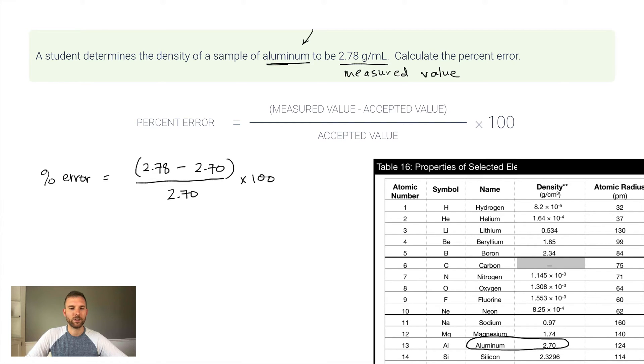Percent error equals the measured value, 2.78, minus the accepted value, 2.70, divided by 2.70, then times 100. Let's look carefully at significant figures and decimal places. On top we're doing subtraction, so we look at decimal places: two decimal places in each number. When I subtract these, I get 0.08.